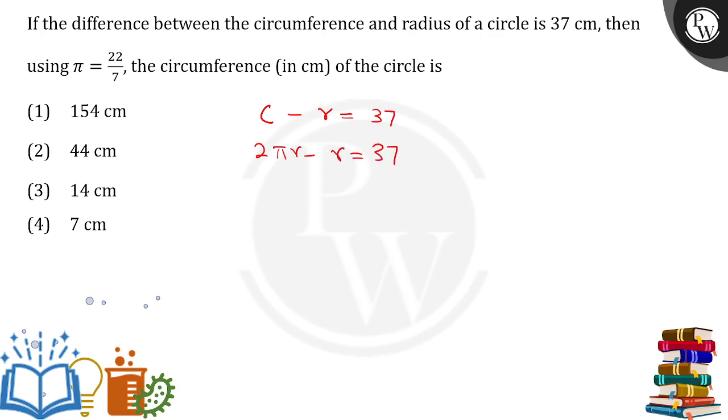Taking r common from here, this becomes r(2π - 1) = 37. To calculate the circumference, I need the value of r, so r = 37/(2π - 1).